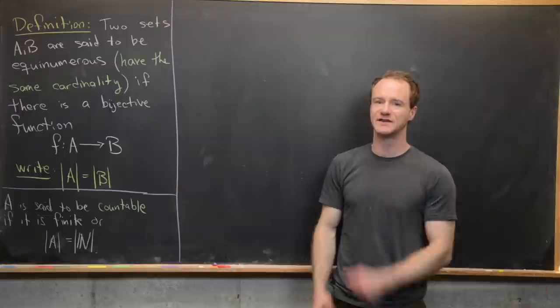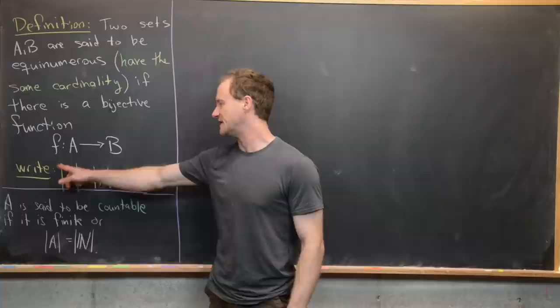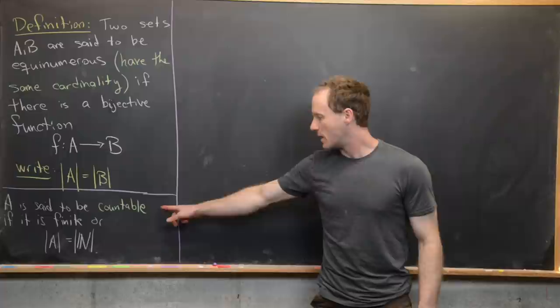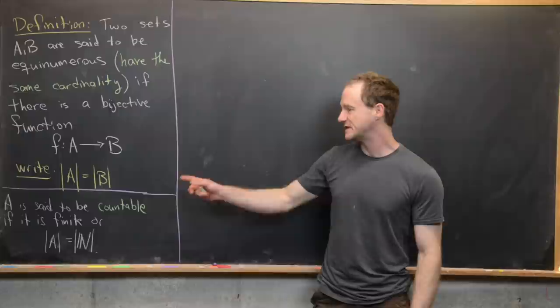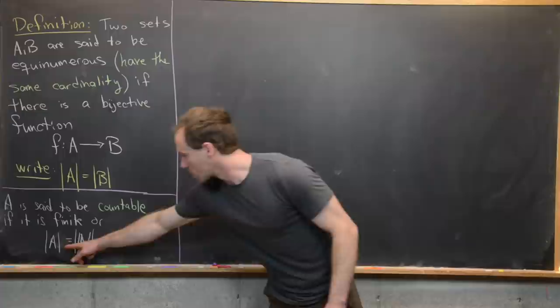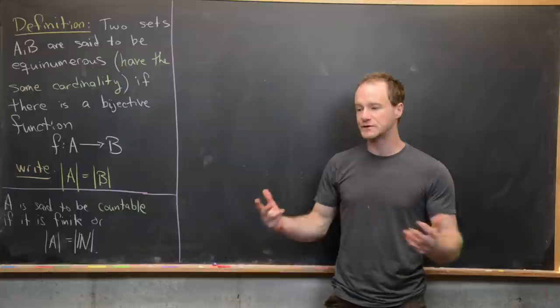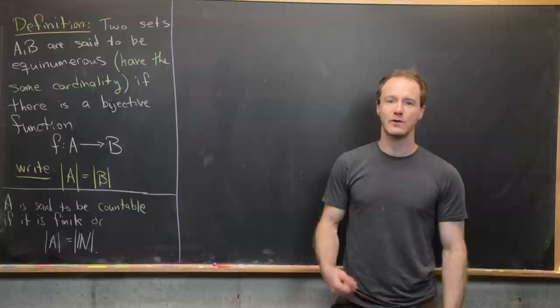Generally we'll write the following notation: we put absolute value symbols around A equals B. Another companion definition is the notion of countability. We say that a set A is countable if it is either finite or it is equinumerous with the natural numbers. Sometimes we use the word 'countably infinite' for this condition of being equinumerous with the natural numbers.